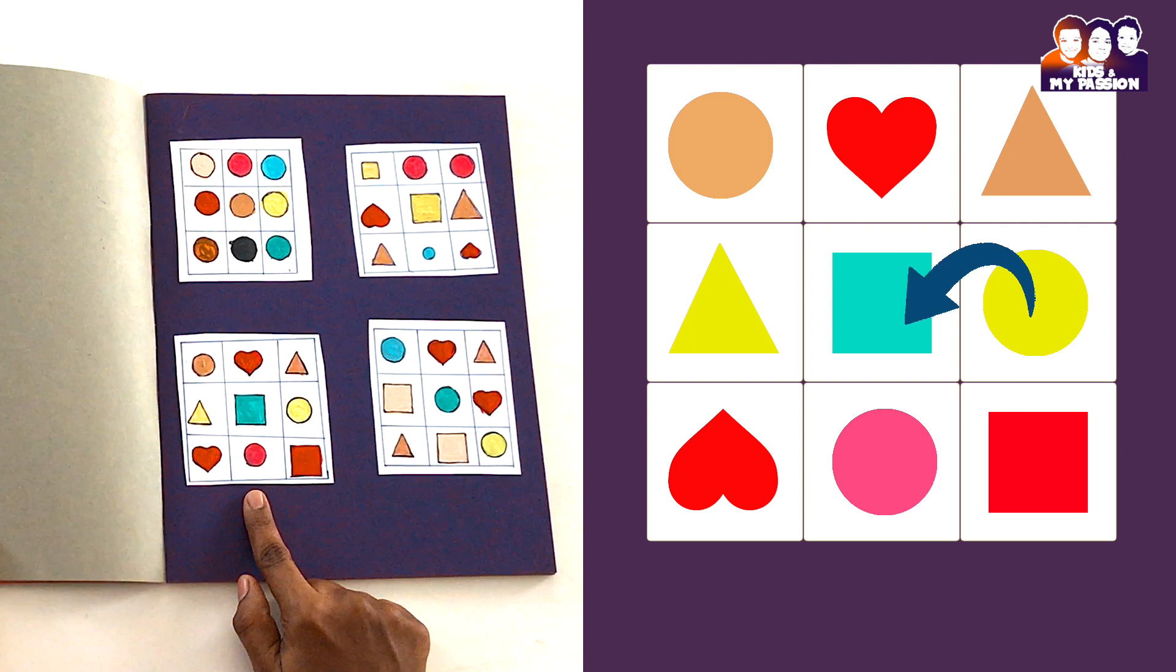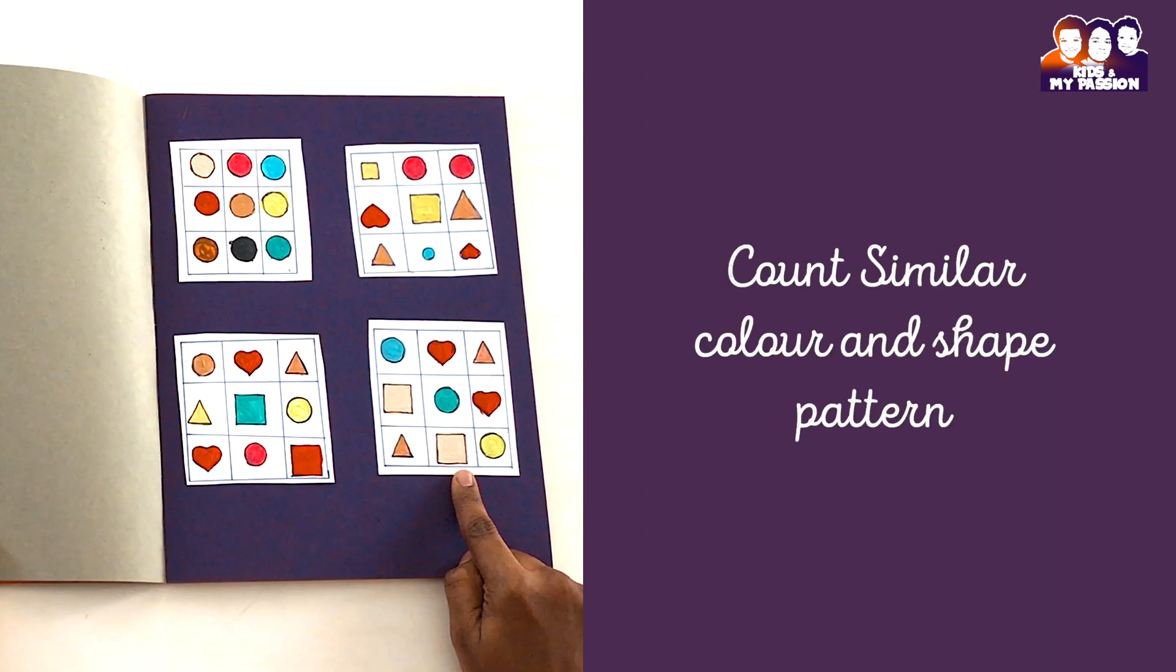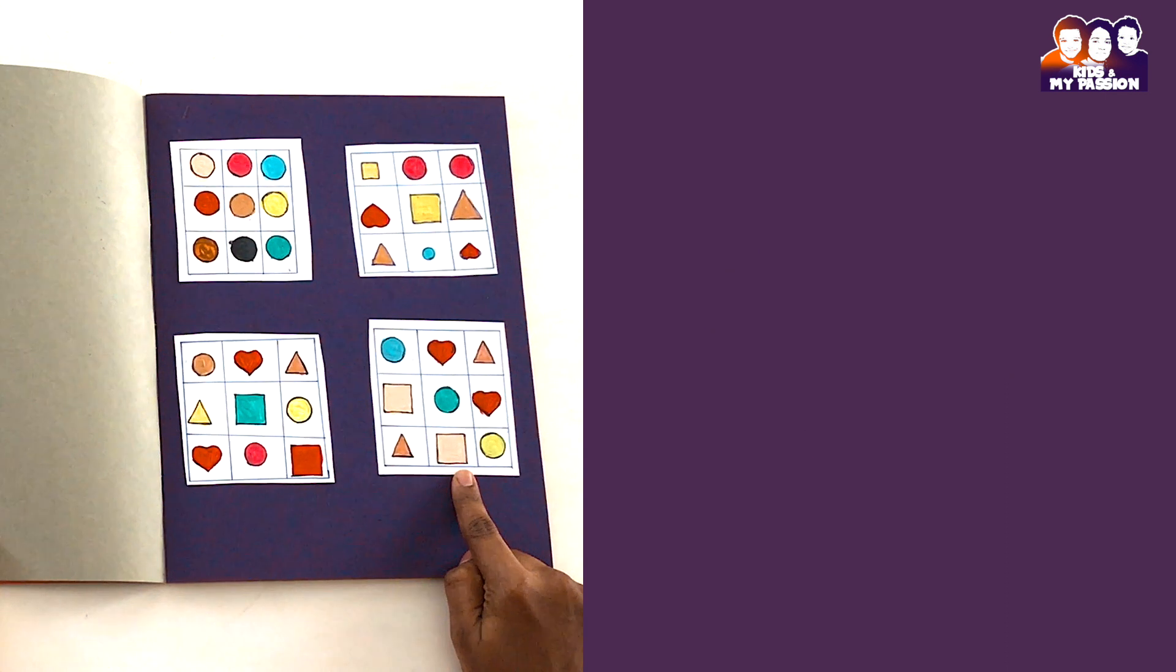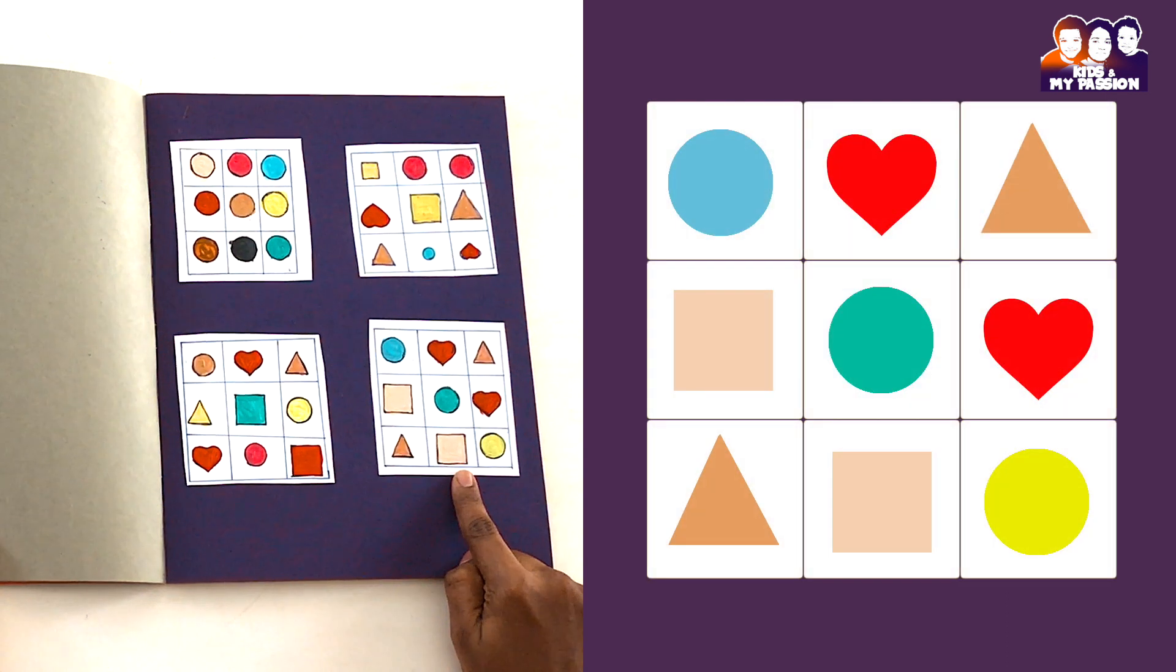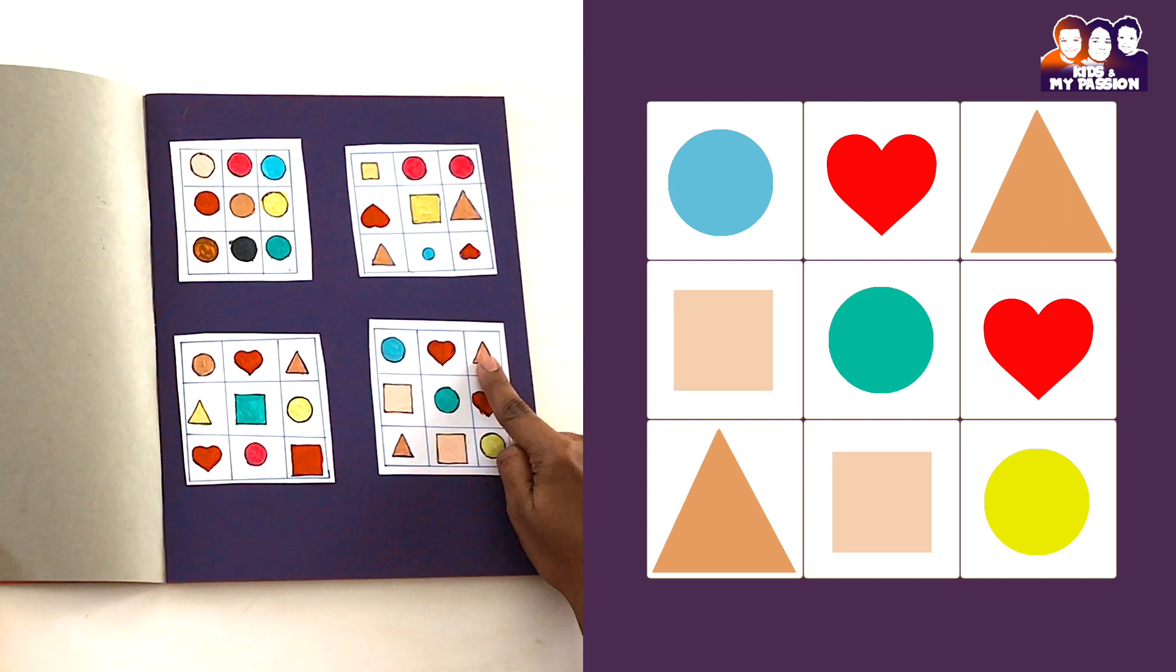Like that, you can ask your kids. Fourth picture: finding shapes and colors which are symmetrical. Square, triangle, heart. So for better understanding, please do follow right-side animation process.